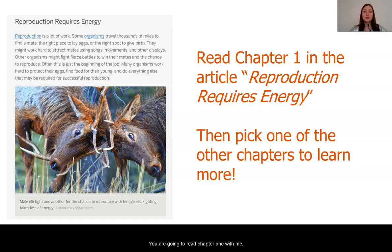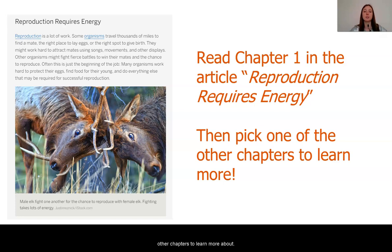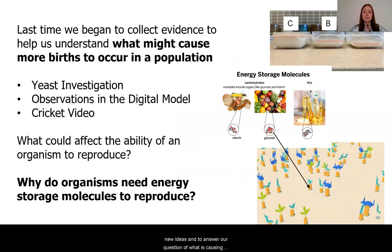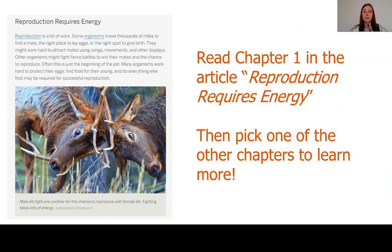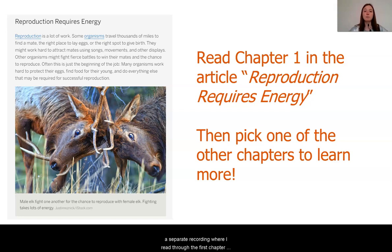In a moment, you are going to read Chapter 1 with me. Then you are going to pick one of the other chapters to learn more about. If you have access to the articles, you can read them on your own — actively annotating, looking for new ideas, and answering our question of what is causing more births in a population and what this has to do with energy. If you do not have access, you can listen to a separate recording where I read through all the chapters.